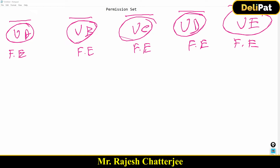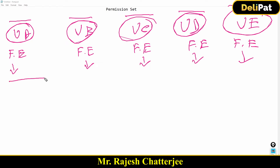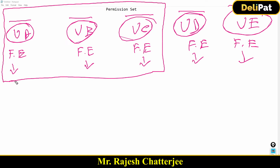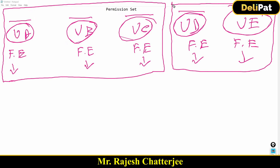Now, all five users are able to create reports, which means the 'Create Report' permission has already been given in the profile. The problem statement is this: the business asks you to remove the 'Create and Customize' report permission from three of these users, while ensuring the other two users still have access to create and customize reports. So three users get no access, and two users retain access.